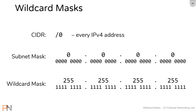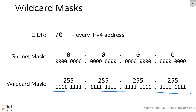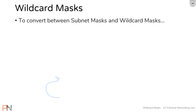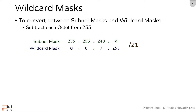You'll always be able to convert between wildcard mask and subnet mask by taking the binary of the subnet mask, flipping all the bits, and converting it back into decimal. But there's also an easier way: simply subtract each octet from 255. For example, with the slash 21 we converted earlier — 255 minus 255 is 0, 255 minus 255 is 0, 255 minus 248 is 7, and 255 minus 0 is 255 — giving you the wildcard mask 0.0.7.255.